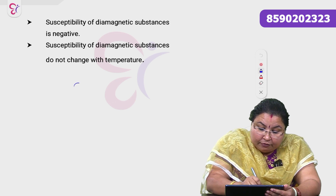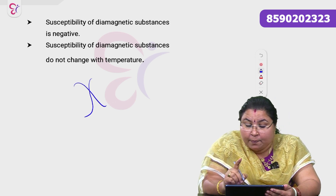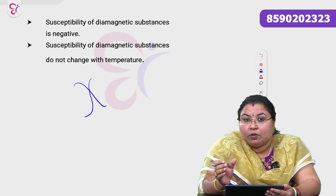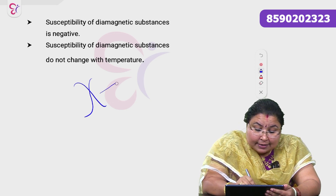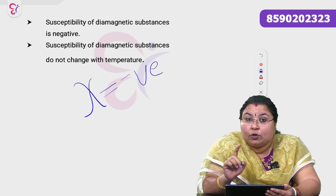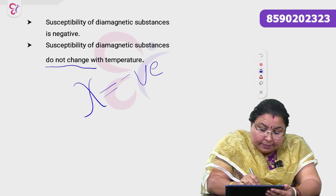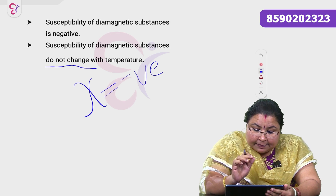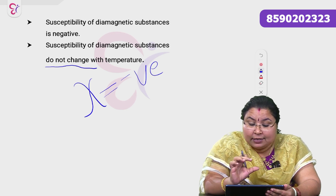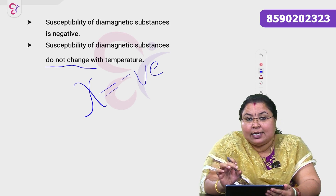The susceptibility of diamagnetic substances is negative. Importantly, the susceptibility of diamagnetic substances does not depend on temperature — it is independent of temperature. So, susceptibility of diamagnetic substances is negative and temperature-independent.